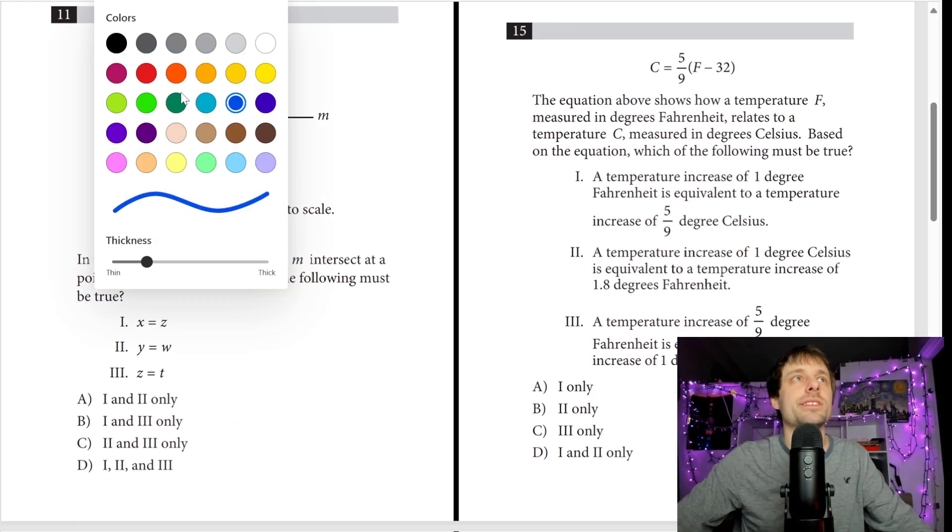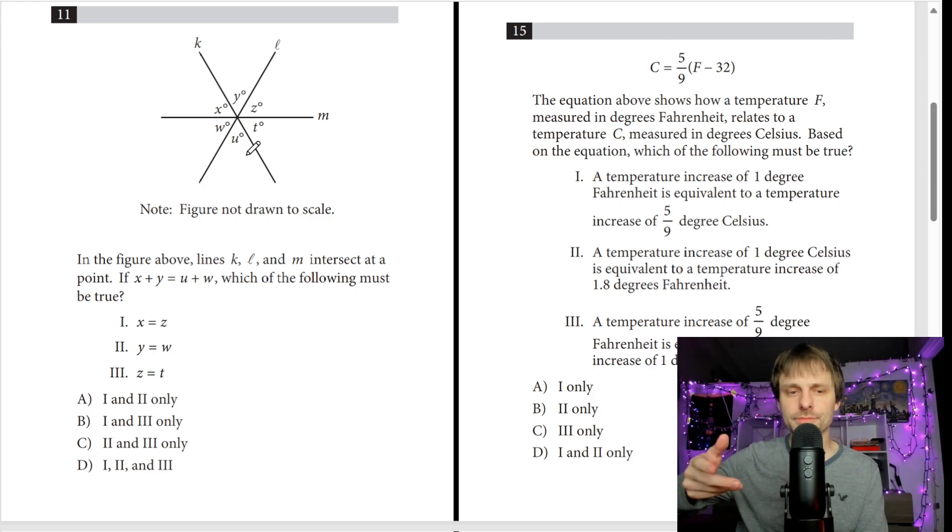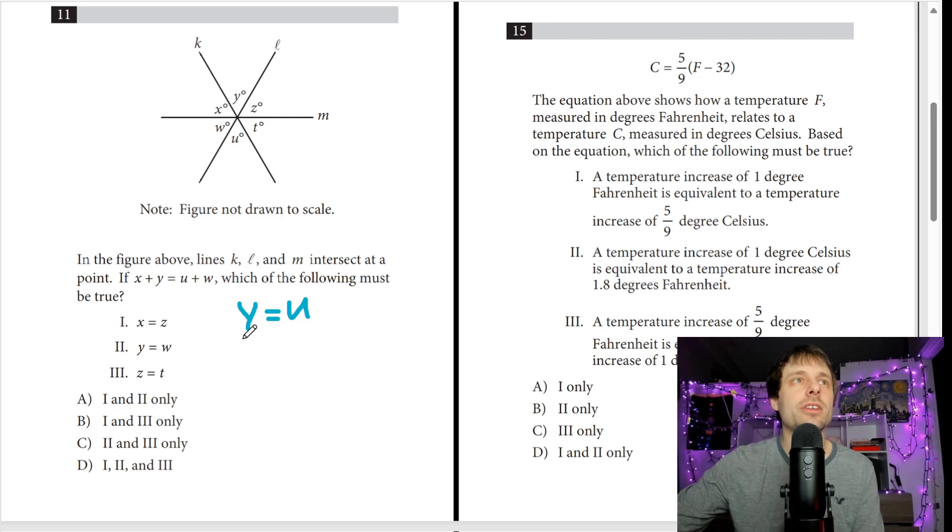Number 11. This is a really good problem. Before I even look down below, before I even allow down below to confuse me, there's three equations I can make right off the bat. I know that y is equal to u. They're vertical angles. I know x is equal to t. They are vertical angles. And w is equal to z.